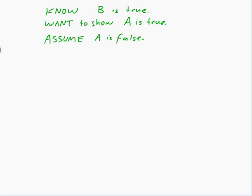And then what you do is you do a whole lot of working of some sort. And at the end, you come down to showing something that you know is wrong. So you come down to something that's stupid. So in the end we get, b is false.